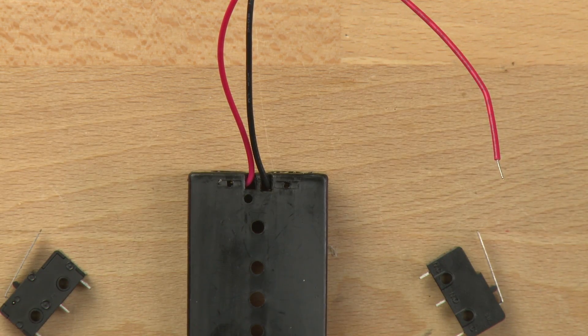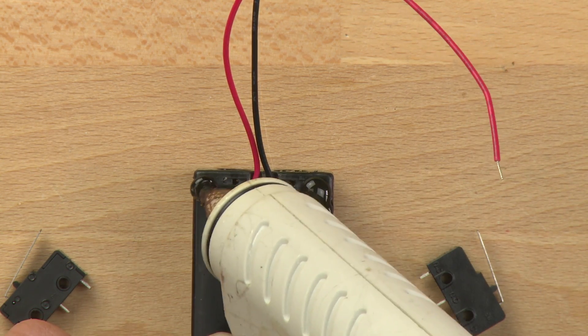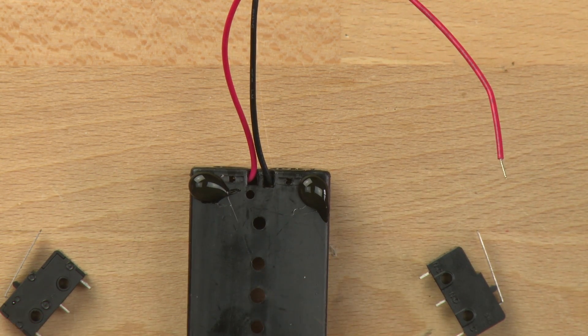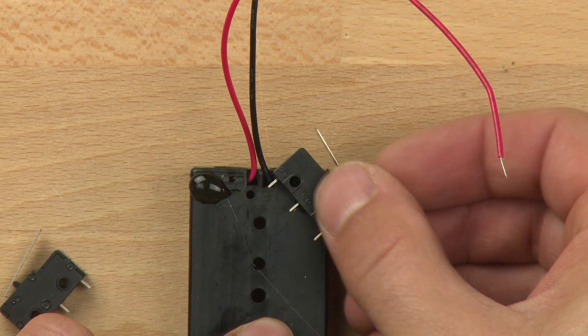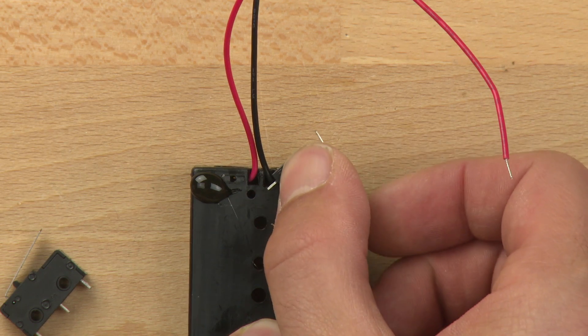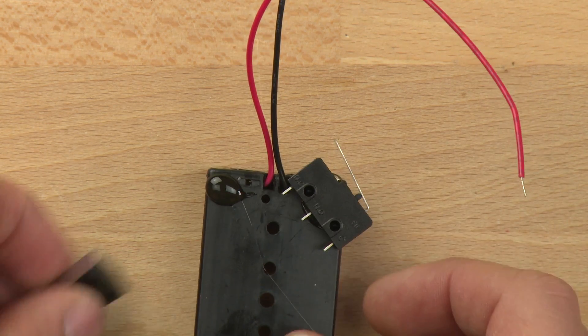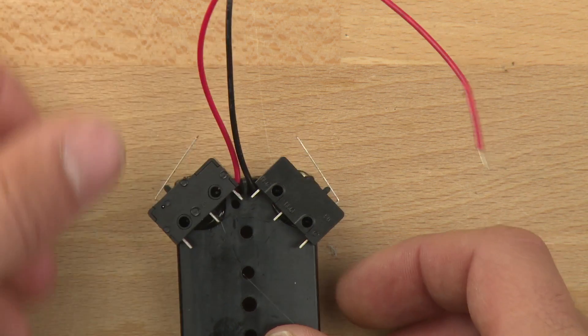And so we're going to take a little bit of hot glue, put a little blob on that corner and a little blob on that corner. And then we'll take our switch and we'll set it there and we kind of want to make sure that the hot glue does not interfere with the lever. There we go, like that.